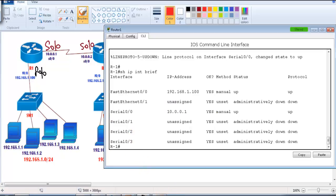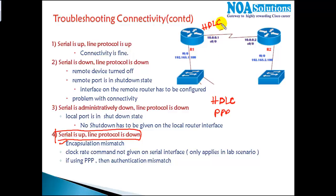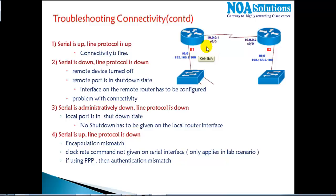There is one more status message: 'up and down'. You will see 'up and down' when there is an encapsulation mismatch. On WAN connections we use two protocols — HDLC and PPP. If I'm running HDLC on one side and PPP on the other side of the interface, there is a mismatch of protocols, and then you'll see 'up and down' — meaning the link is up but the protocol is down. Another possible cause in lab scenarios: when using a back-to-back cable, one side is DTE and the other is DCE, and on the DCE interface you need to add a 'clock rate' command.